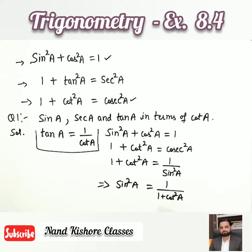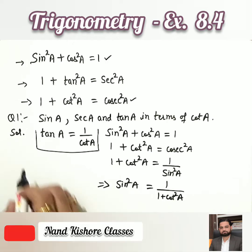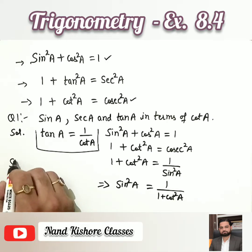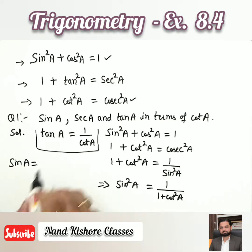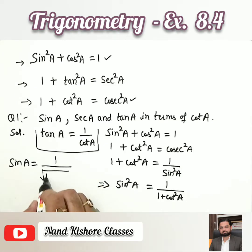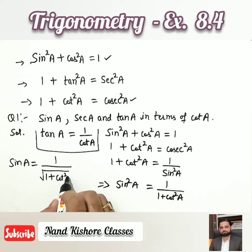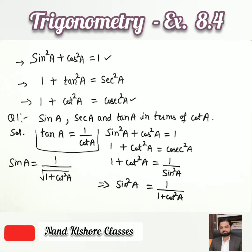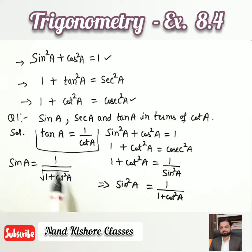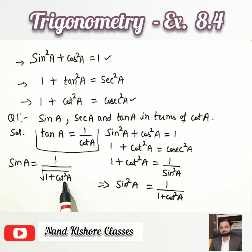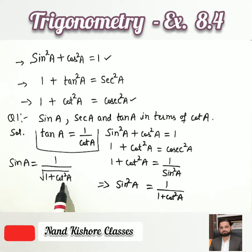Now taking the square root on both sides: the left side becomes sin A, and the right side becomes 1/√(1 + cot²A). The square on sin²A is removed, leaving sin A. So sin A is expressed in terms of cot A — only cotangent appears on the right side.